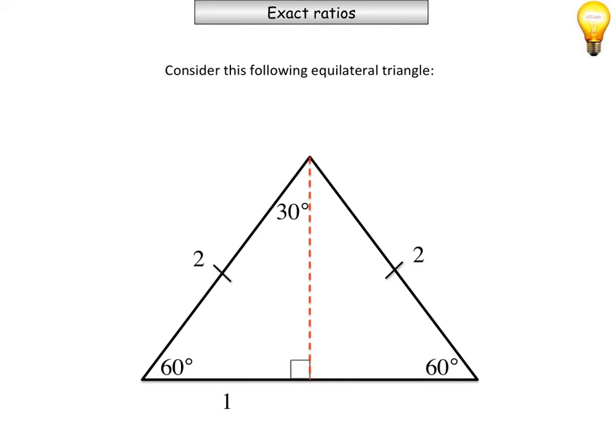Now using Pythagoras' theorem to work out the height of this triangle, I could say, okay, let's call it h. So h squared is equal to the hypotenuse squared minus the other side length squared. So h squared is equal to 3. So therefore, h is going to be equal to, in exact form or in surd form, the square root of 3. So there's the height of that triangle.